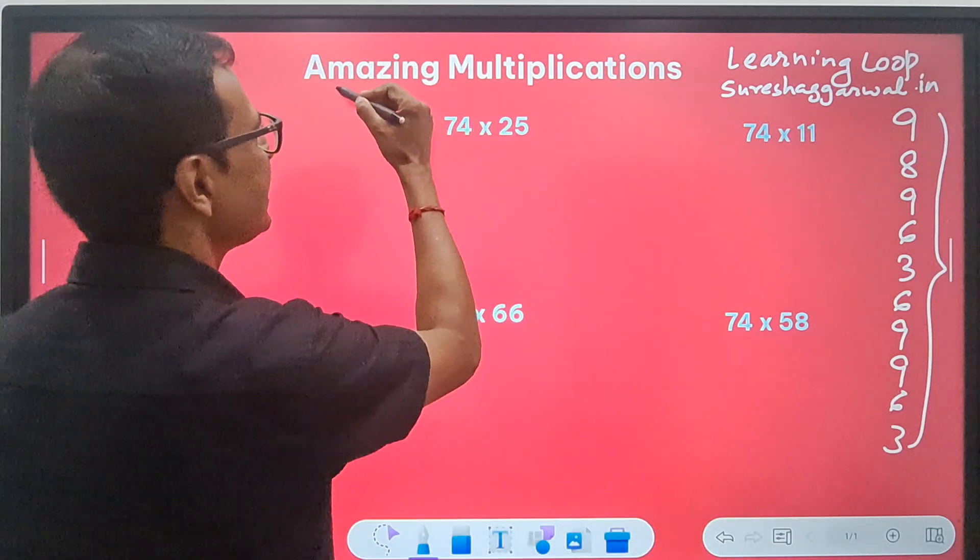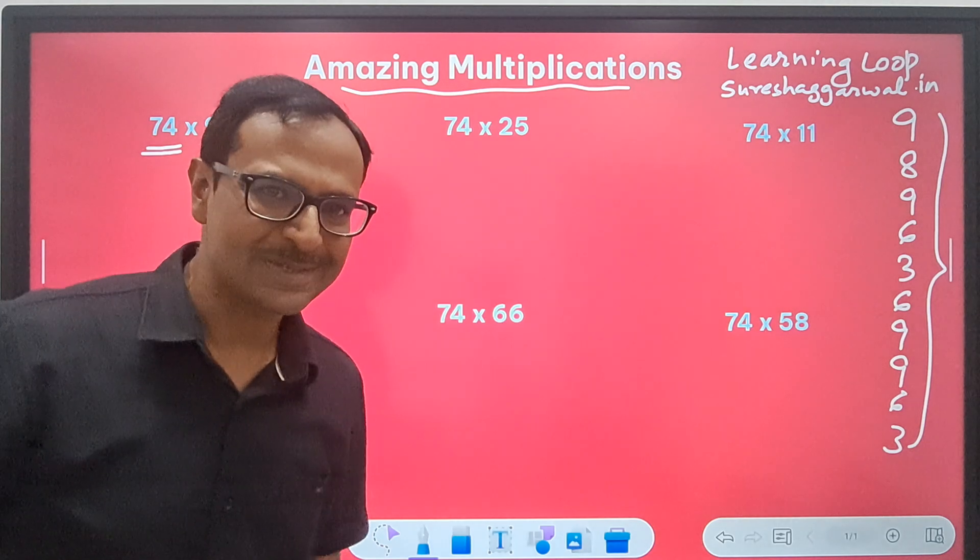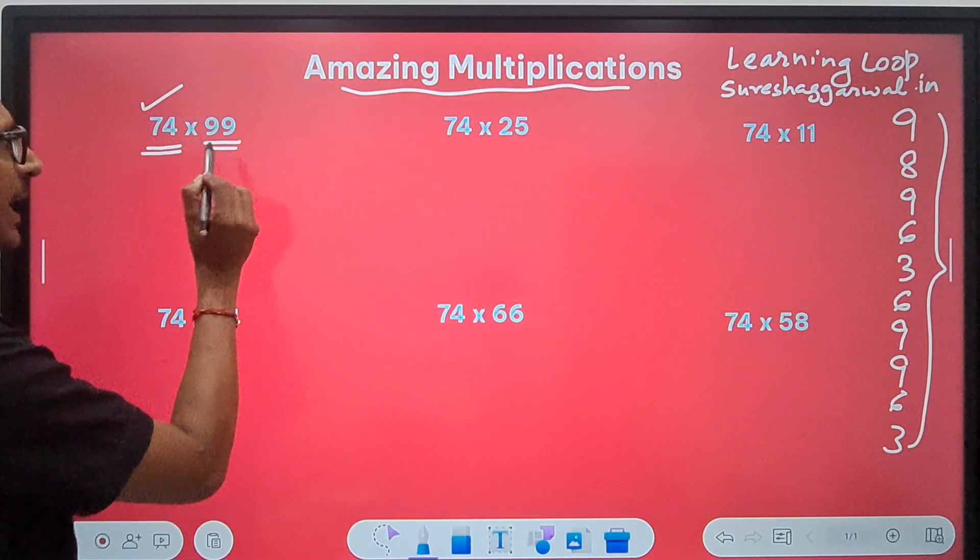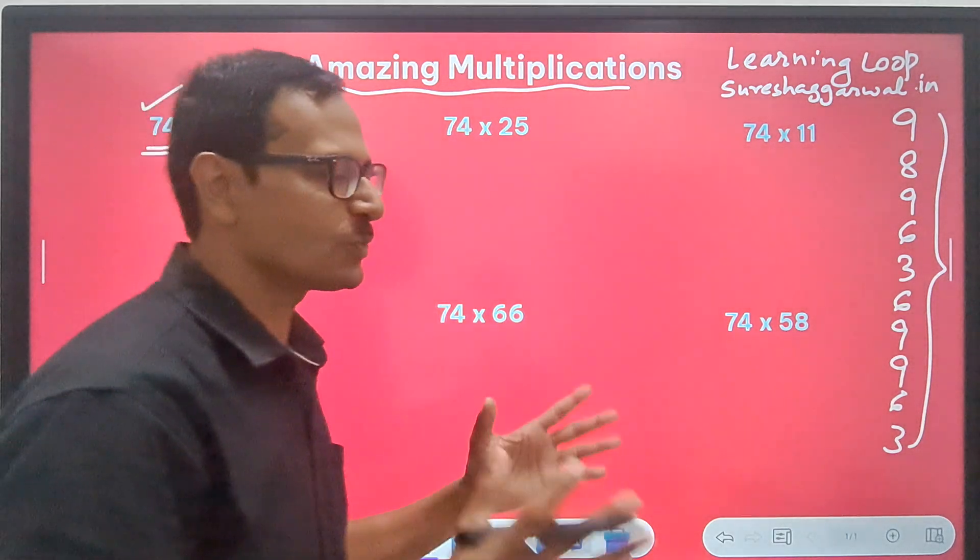Let's see these amazing multiplications. The first one, I am trying to multiply any number by 99. Vedic maths works wonders here.